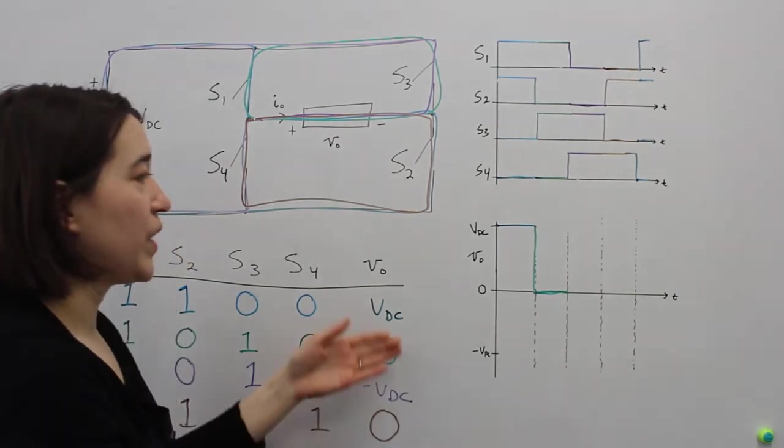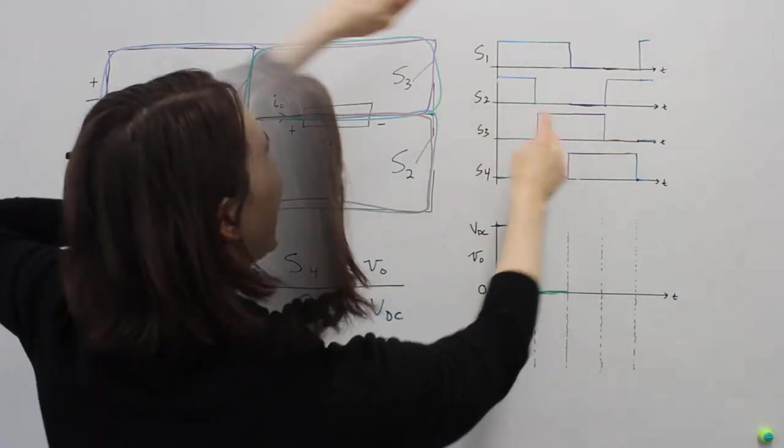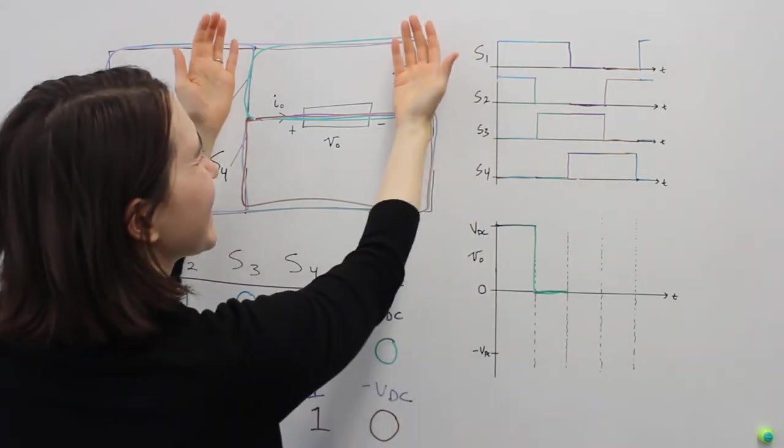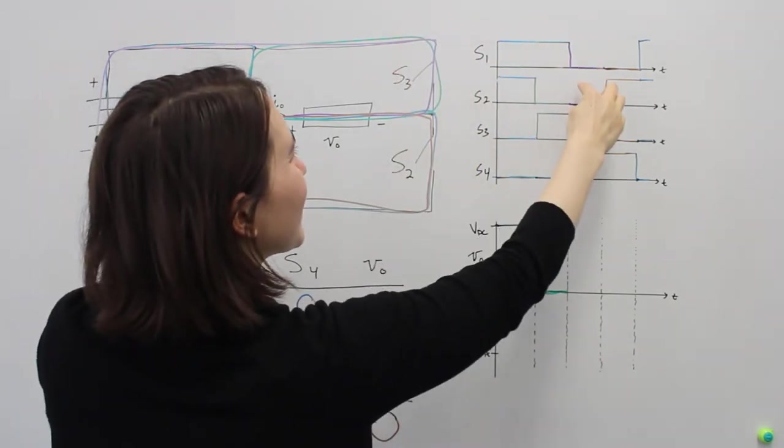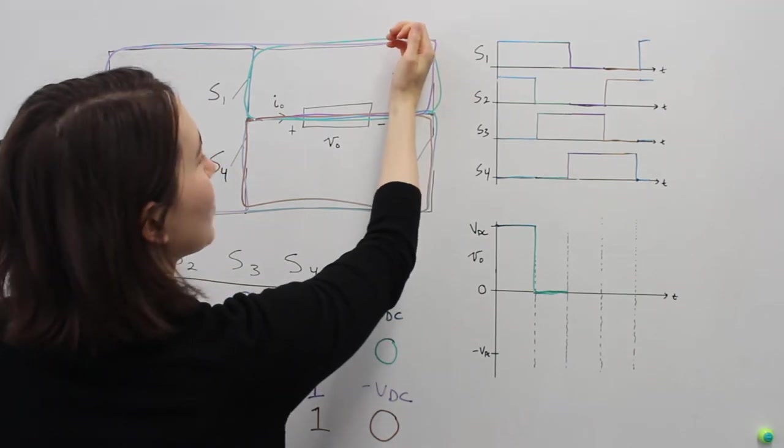Now, we can look at the next switching state. So before S1 and S3 were on, these two. And now we are going to turn S1 off. S3 is still on, and we are going to turn on S4. So we are turning these two switches on.